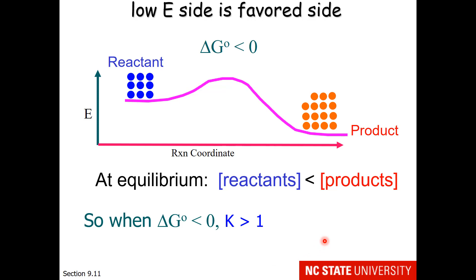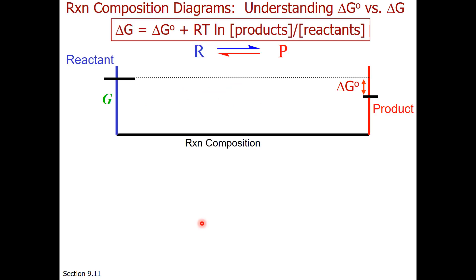Think about how this diagram incorporates both enthalpy and entropy. In enthalpy terms, the lower energy side is preferred. But if we put all 15 tokens on that side, there's no entropy to the system. So a portion of the tokens are placed at higher energy to have some variability and spread the energy among multiple states. This is Mother Nature's balance between low energy and dispersed energy.